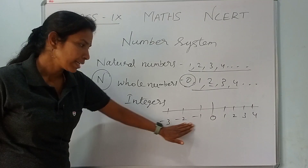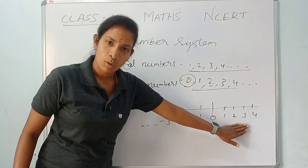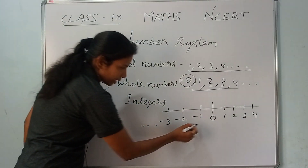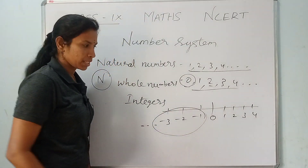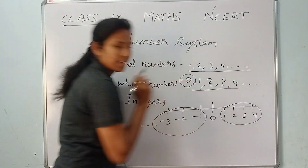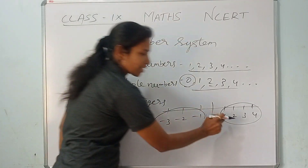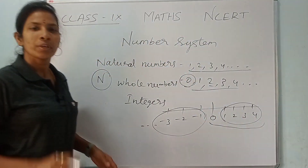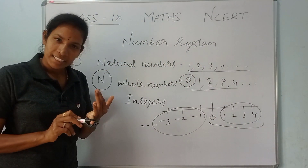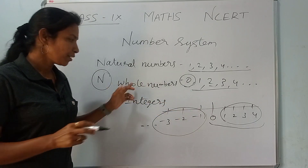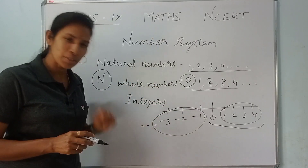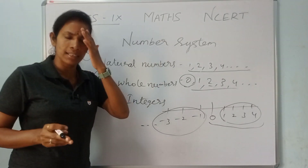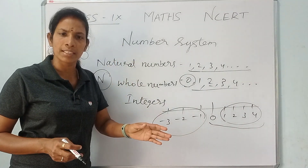Integers contain both negative numbers and whole numbers. Positive integers include natural numbers and whole numbers. Negative integers are the negative numbers. So integers include natural numbers, whole numbers, and negative numbers together.